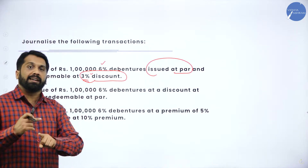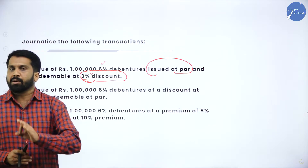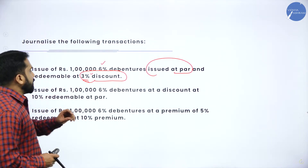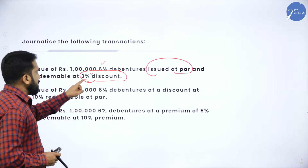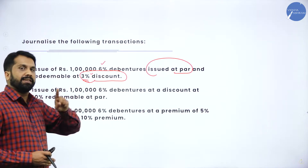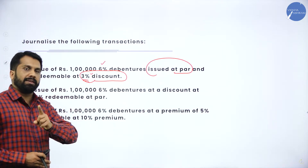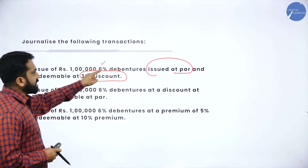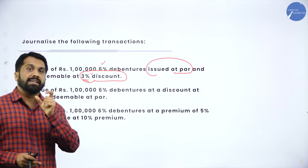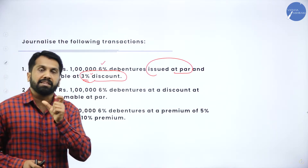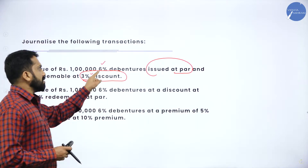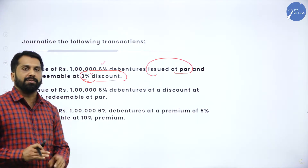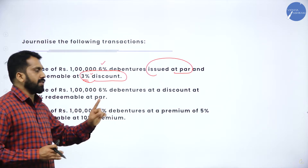I am telling you this 100 times because students commonly make this mistake. They will consider 3% as well as 6%. Remember, this 6% debenture is only the name of the debenture. This 6% we will not consider anywhere.